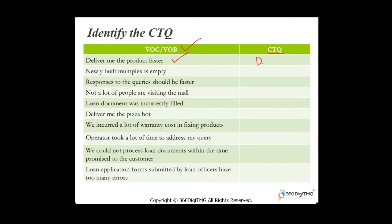The CTQ is delivery time. If your customer or business says 'deliver me the product faster,' you'll say you're going to measure delivery time and try to reduce it. A multiplex owner comes to you and says his newly built multiplex is empty — the possible CTQ would be occupancy percentage, and you'd try to improve that metric.